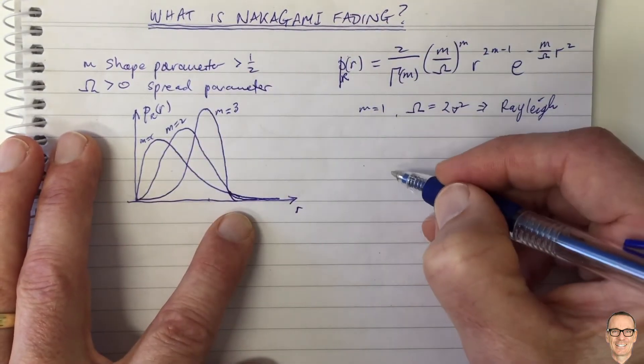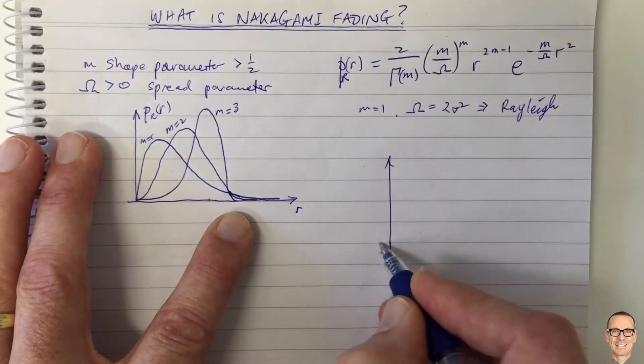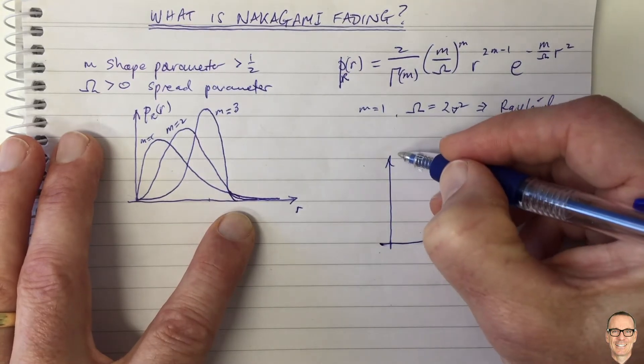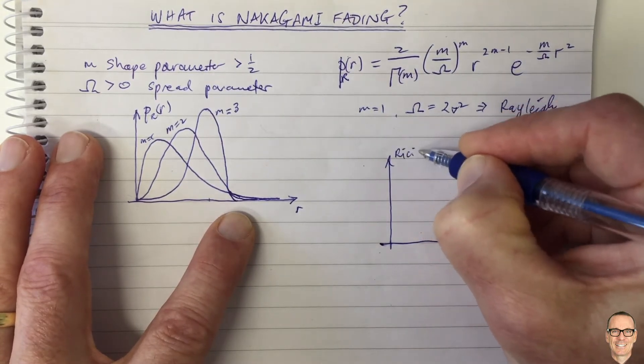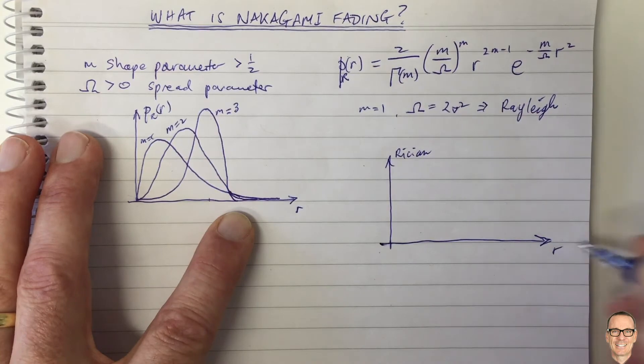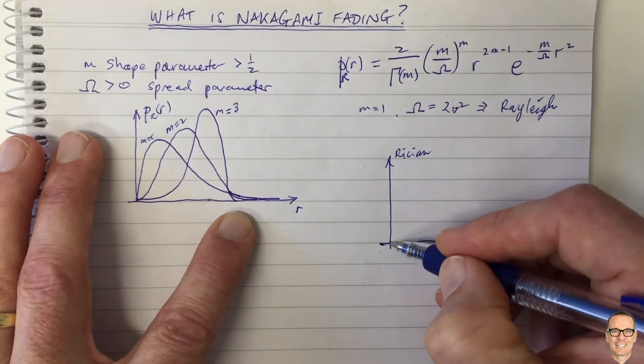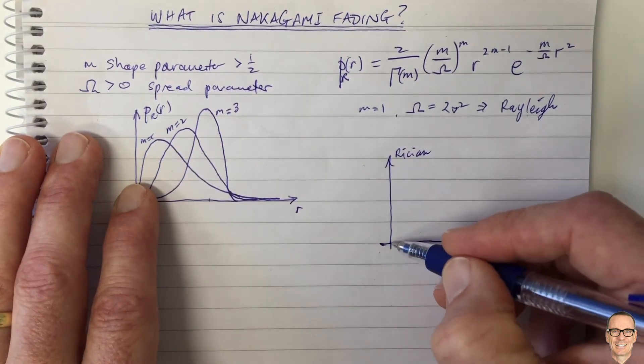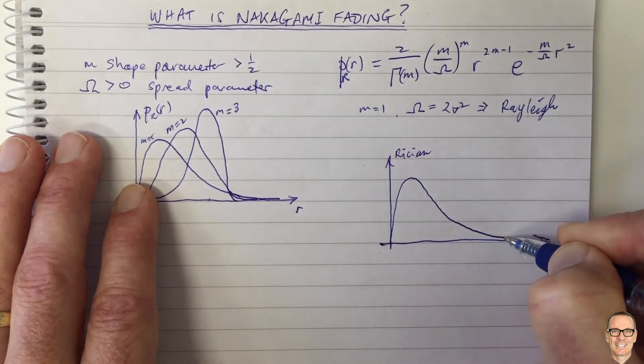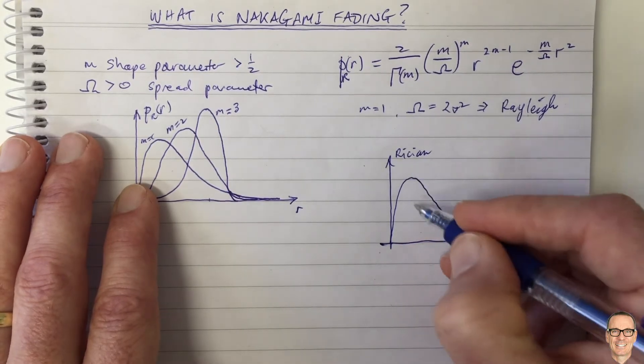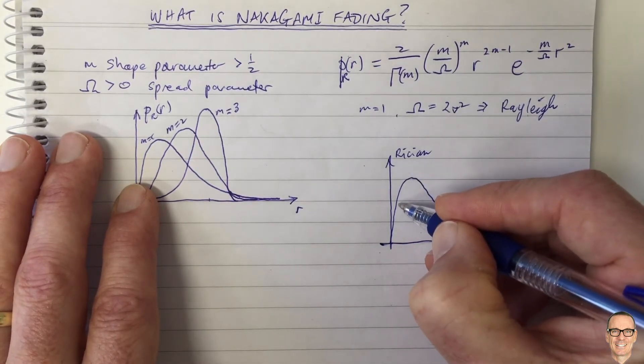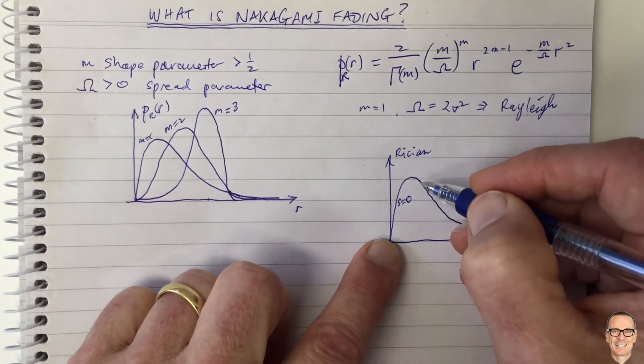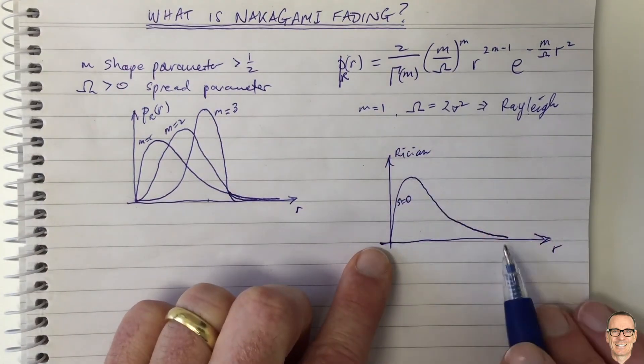I'll just draw a sketch because it's hard often to find comparisons for the Ricean. If this is the Ricean case, as you increase the S parameter in Ricean, both for Nakagami for M equals 1 you have Rayleigh, and for S equals 0 you also have Rayleigh. So for Ricean with S equals 0, you also have Rayleigh. So this one's Rayleigh and this one's Rayleigh, these curves are the same curves.